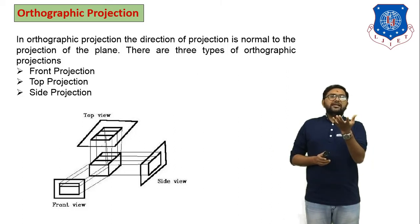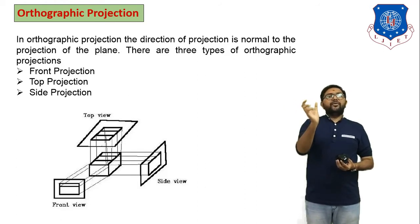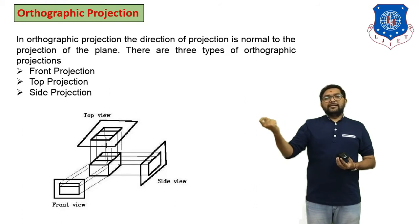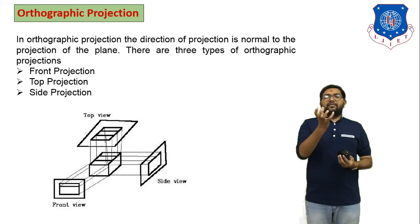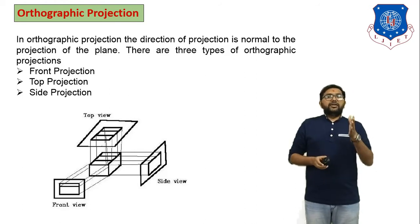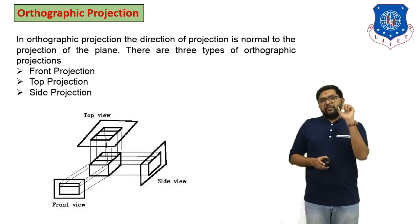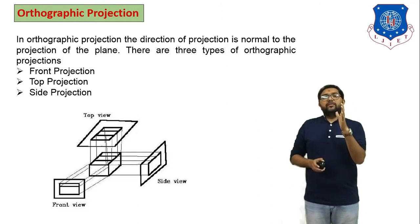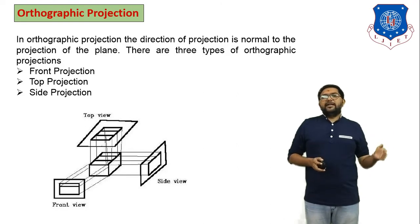You can easily understand this from the figure below. In that figure there is one object and three different views are generated: front view, side view, and top view. In orthographic projection there are two methods to generate these views: the first angle method and the second is the third angle method. These two methods you have already learnt in engineering graphics.